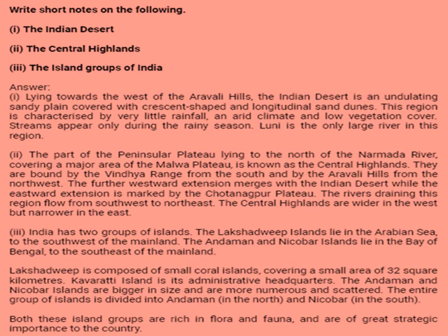Second, the Central Highlands. The part of the Peninsular Plateau lying to the north of the Narmada River, covering a major area of the Malwa Plateau, is known as the Central Highlands. They are bound by the Vindhya Range from the south and by the Aravalli Hills from the north-west. The further westward extension merges with the Indian Desert, while the eastward extension is marked by the Chotanagpur Plateau. The rivers in this region flow from south-west to north-east. The Central Highlands are wider in the west but narrower in the east.